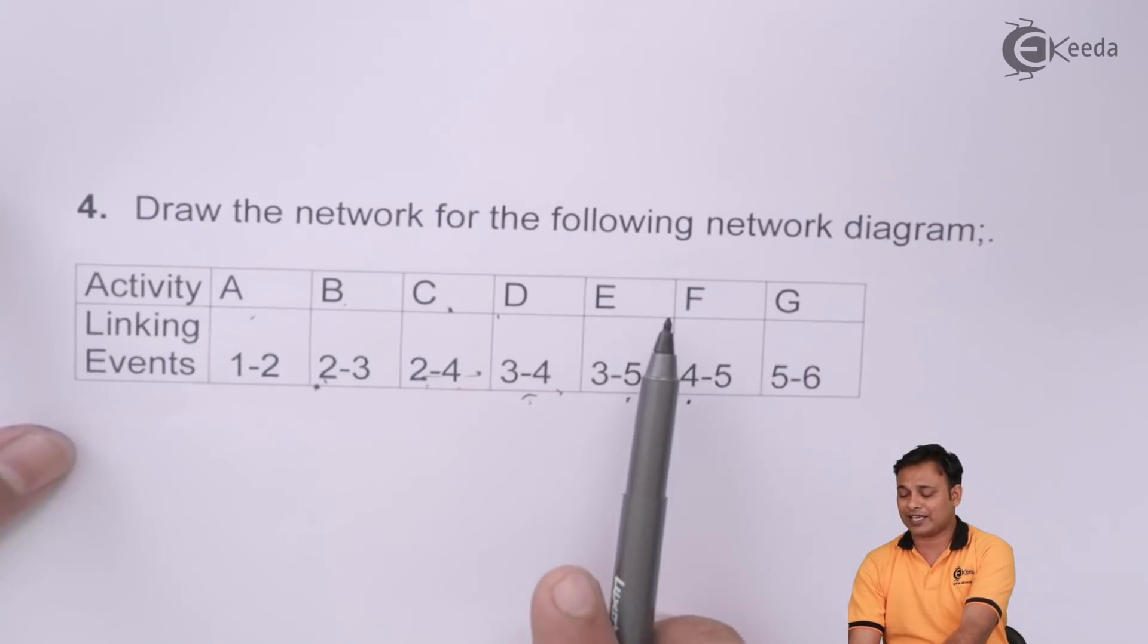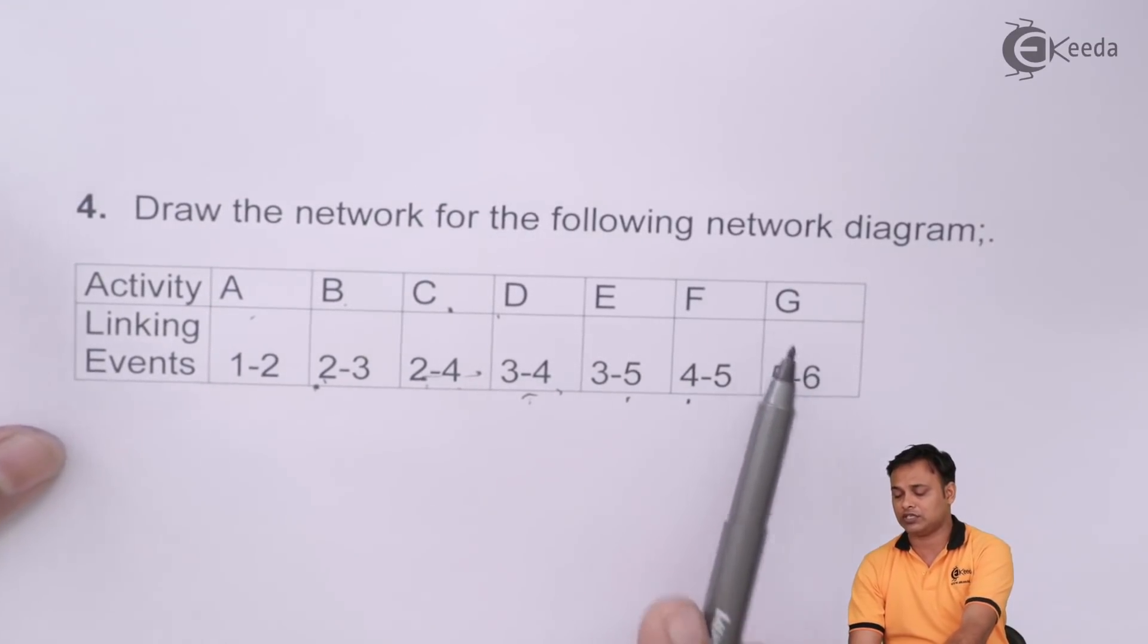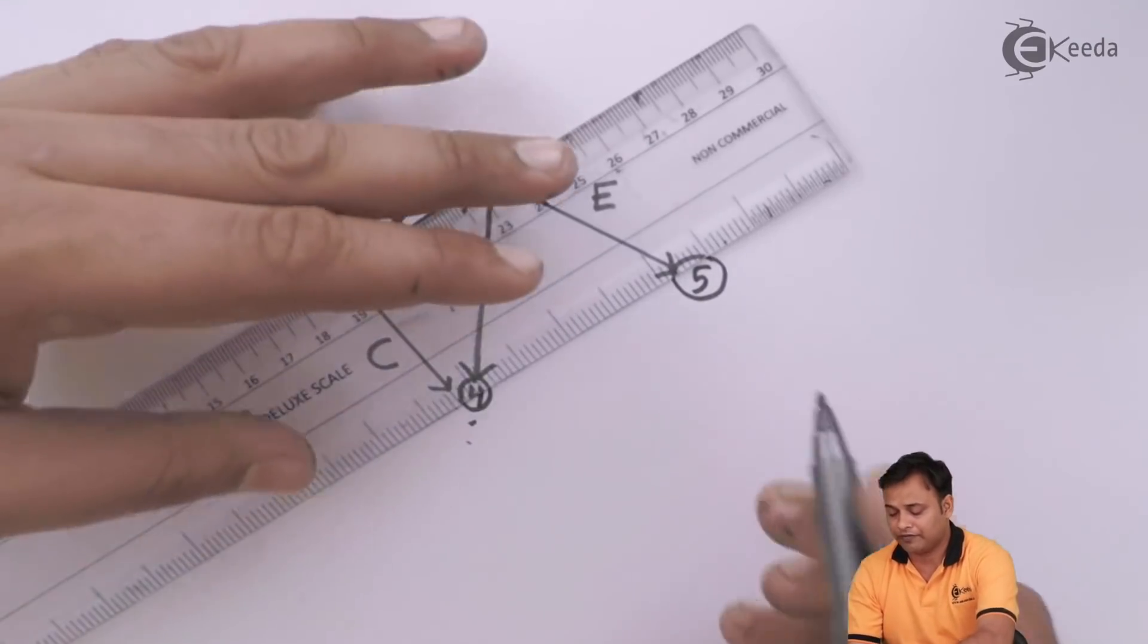Then we have 4 to 5 as F and 5 to 6 as G. So 4 to 5 will be F.